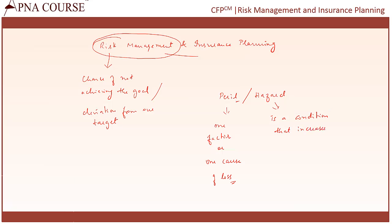What is hazard? If peril is one cause or one factor, hazard is a condition that increases the chance of loss. For example, there's a cotton godown and a guard standing outside unfortunately smoking — he is a hazard. It increases the possibility that the cotton might catch fire because of his negligence. That is typically known as a hazard.